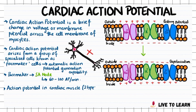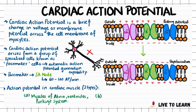The action potential in cardiac muscles are of two types. There is the action potential in the muscles of the atria, the ventricles, and in the Purkinje system. And then there is an action potential in the conducting cells of the SA node.